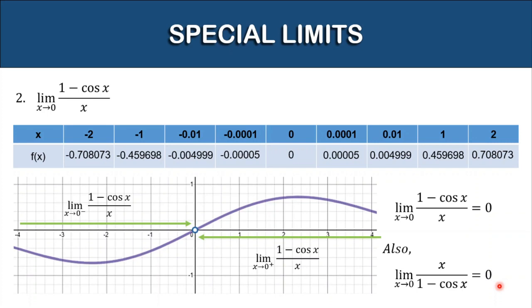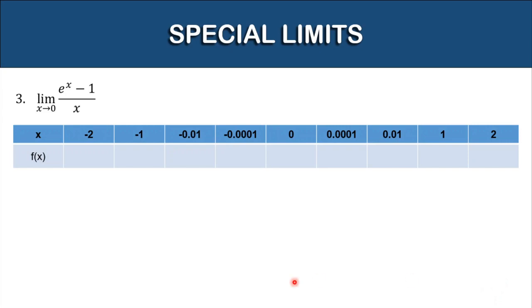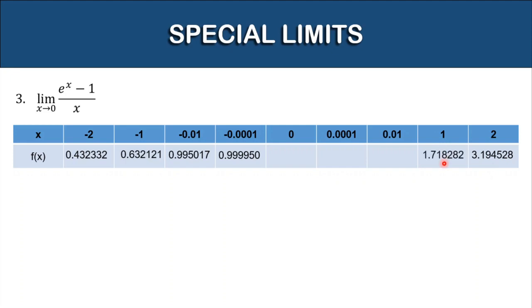Let's have our third special limit: the limit of e raised to x minus 1, all over x, as x approaches zero. Let's have the table of values first and set values for x approaching zero from the left and from the right. By substitution: if x is negative 2, negative 1, negative 0.01, negative 0.0001, and from the right, if x is 2, 1, 0.01, 0.0001 — here are the corresponding values of our function.